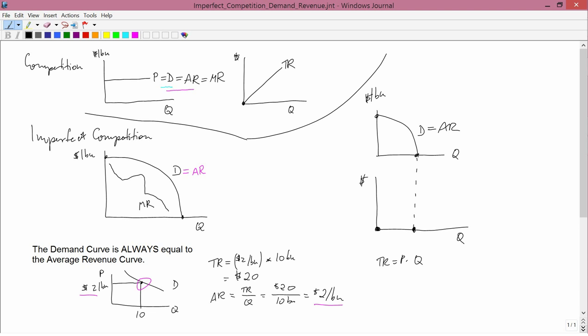In between, both price and quantity are greater than zero, and so you have something that's positive. I don't know exactly what it looks like, but some kind of shape like that. So that's what total revenue, average revenue, and marginal revenue look like with imperfect competition.